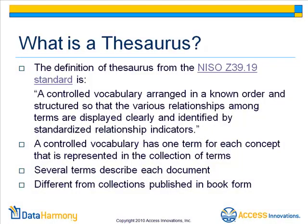What is a thesaurus? The definition of thesaurus from the NISO Z39.19 standard is a controlled vocabulary arranged in a known order and structured so that the various relationships among terms are displayed clearly and identified by standardized relationship indicators. A controlled vocabulary has one term for each concept that is represented in the collection of terms.